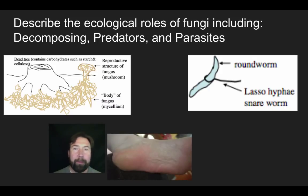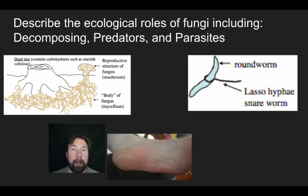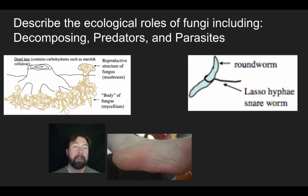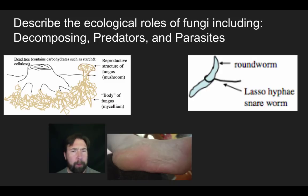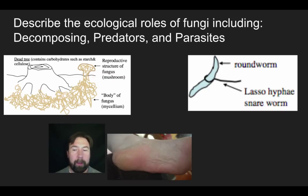The last example of a fungal niche is that of a parasite. A common example is athlete's foot — a human disease in which a fungus grows on your skin, and the mycelium embeds into the outer surface of your skin, leading to digestion of the outer skin layer, causing itching and rash. There are also much more deadly parasitic fungi that, particularly if you're immunocompromised, can be fatal.